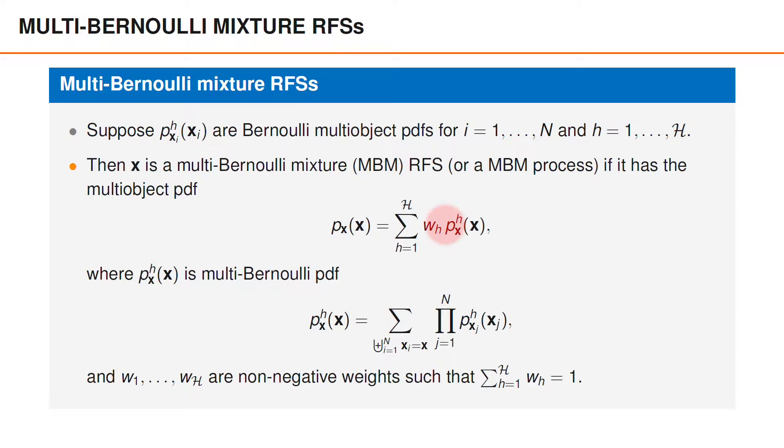Here, the weights are non-negative and sum to 1, which means that they can be viewed as probabilities of the different hypotheses. Also, under hypothesis H, X is the union of Bernoulli random finite sets, X_1 to X_N, where X_i is a Bernoulli random finite set with the multi-object PDF P_X_i^H.